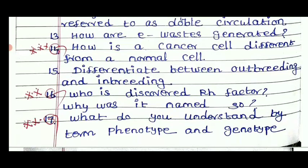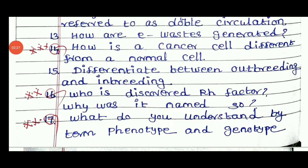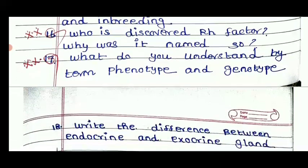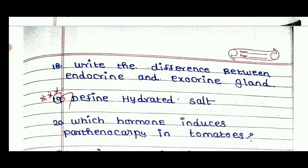How are waste generated? How is a cancer cell different from a normal cell? Difference between outbreeding and inbreeding — this is very important. Who discovered the Hardy-Weinberg factor and why was it named so? What do you understand by the terms phenotype and genotype? These are important for first and second vision preparatory examinations. We will repeat genetics — monohybrid and dihybrid — which is very important. Also, write the difference between endocrine and exocrine glands.